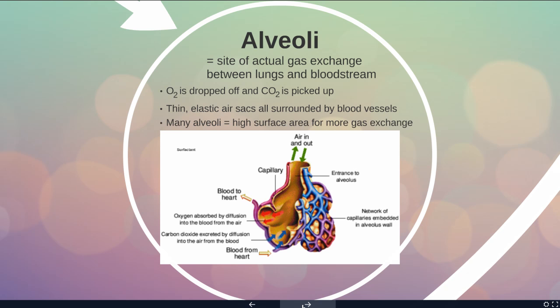These little grape-like sacs give you a higher surface area for more gas exchange. If this was just one single tube, we wouldn't have so much surface area, but because we have all these little circles with lots of blood vessels around them, we can exchange lots of oxygen in just one breath and one heartbeat.